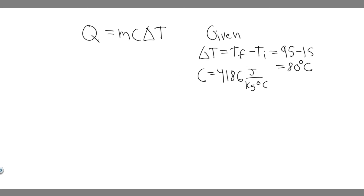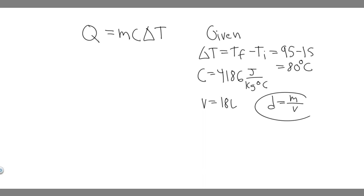Now what we're going to want to do is find the mass. Keep in mind we're not given it explicitly, but we can solve based on what we're given. They give us the volume, which is 18 liters of water. We're going to use the formula: density equals mass over volume. If we want to find the mass, we multiply both sides by V, giving us mass equals volume times density.